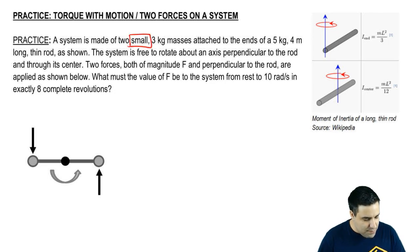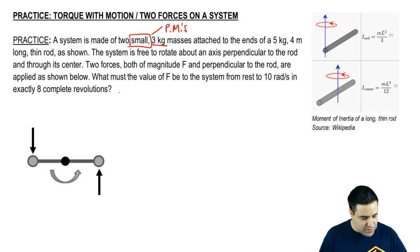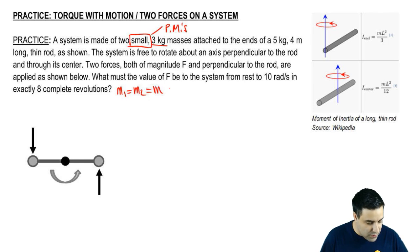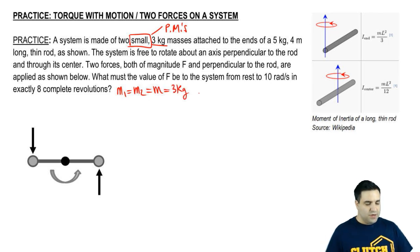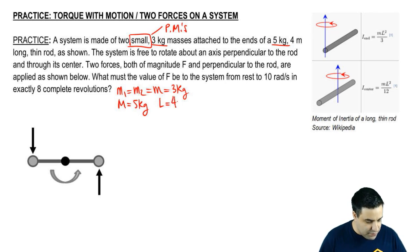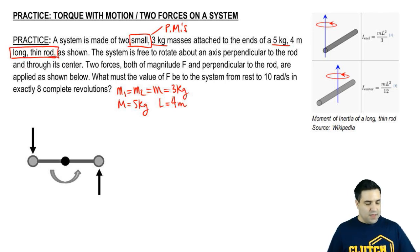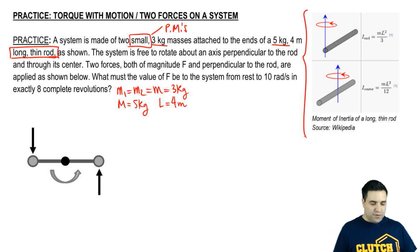Two small masses means that these are going to be point masses and not rigid bodies or shapes. They have a mass of three kilograms — M1 equals M2, so I'll call it little m equals three kilograms. They're attached to the ends of a rod. The rod has a mass of five kilograms, big M equals five kilograms, and length equals four meters. It's a long thin rod. The equations are here for reference and we're going to decide which one to use in just a second.